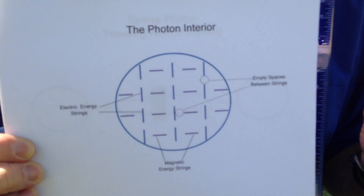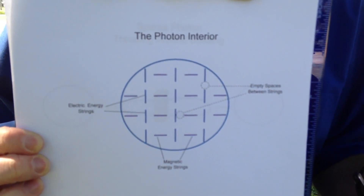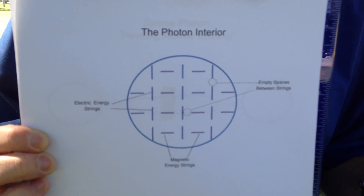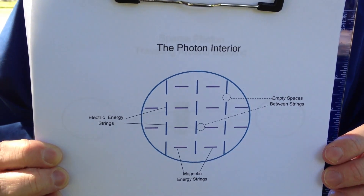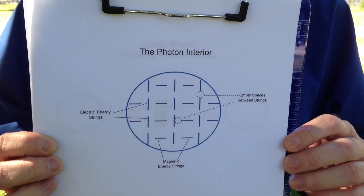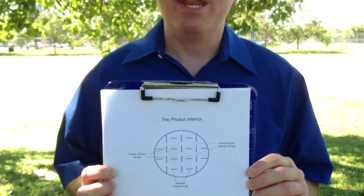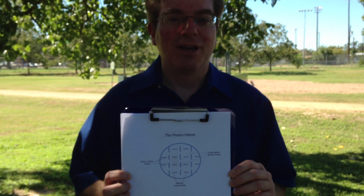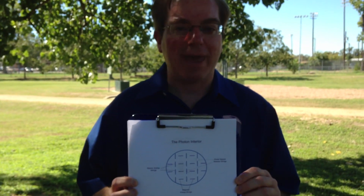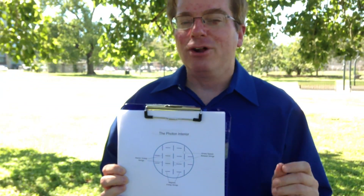I want to emphasize again that the key elements of the photon are these energy strings. So what are these energy strings? Energy strings are both mass and energy. Einstein pointed out many years ago that all objects have mass and energy. Thus, anything with mass has energy, and anything with energy has mass. On a large scale it is difficult for us to see this, but on a quantum scale it is much easier. The energy string is where we get to the essence of energy equaling mass, mass equaling energy.